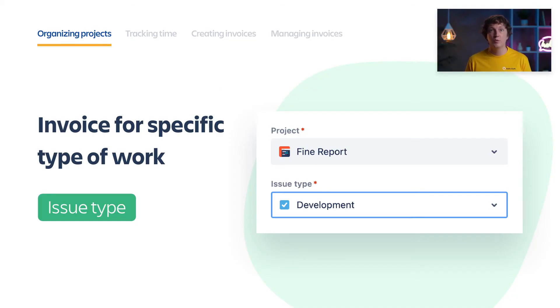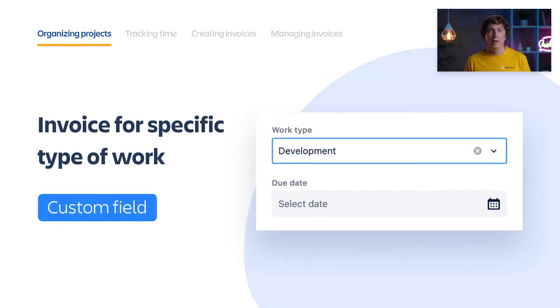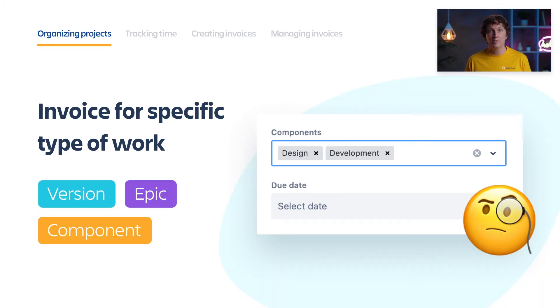Sometimes you need to use different rates for different types of work regardless of who worked on the task — for example, if people frequently switch between roles. Our lead developer may do both development, automated QA, and project management. Or another example: we charge all team meetings at a flat rate. The best option here is to use issue types — simply create a separate issue type for each work type. Another option is to use a custom field. Using epics, versions, or components is not the best idea since they exist inside one project only and sometimes allow multiple selections.